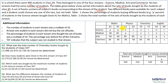For science, the set of books would be maths, physics, chemistry, and English. Similarly for medical, the set of books would be physics, chemistry, and English, and so on. Two different books are available for each subject and a student could choose any one of the two but not both. For each subject, we have two books available.